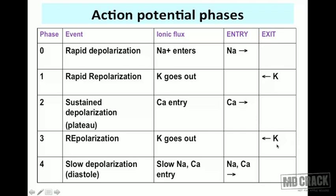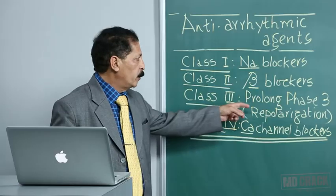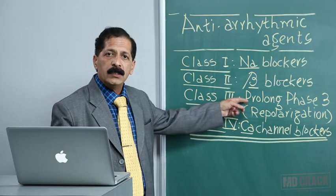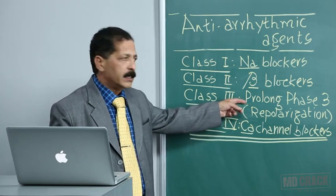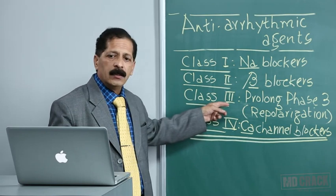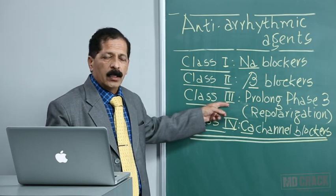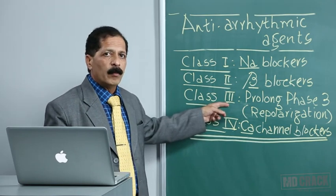Next is phase 3, where potassium goes out again — that's repolarization. This is exactly the phase affected by class 3 agents, which prolong it. Remember: class 3, phase 3. Fix that in your mind.